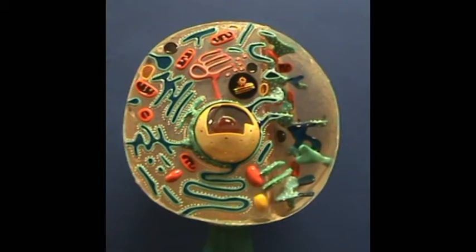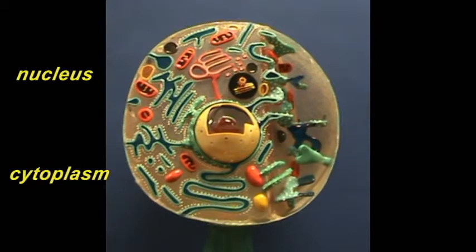You can divide the cell into the nucleus, which is right over here, and everything outside the nucleus, which includes all these structures, and this would be referred to as the cytoplasm. So first, let's take a look at the nucleus.